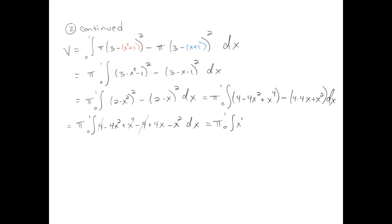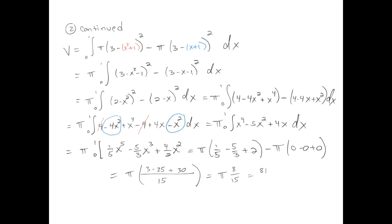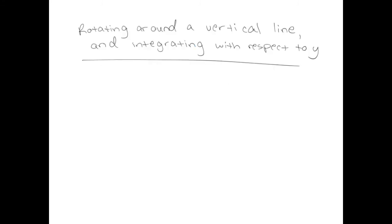The highest power is x to the fourth. The x squared terms will add up to give minus 5x squared, and we've also got a plus 4x. Okay, now we're as simple as possible, and we are ready to take the antiderivative. Now I'm plugging in 1 and plugging in 0 and subtracting. Looks like our final answer is 8π over 15, and that positive number represents the volume of the three-dimensional figure on the previous slide.